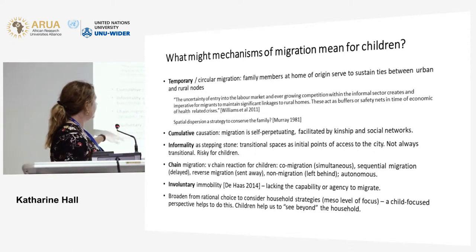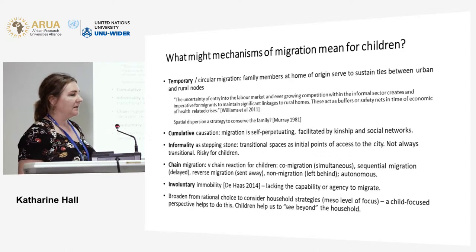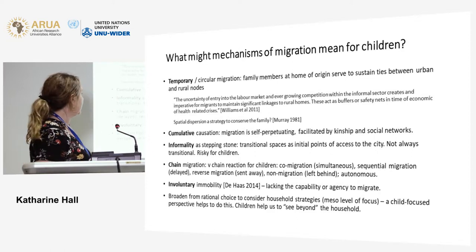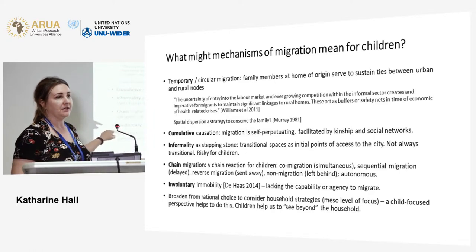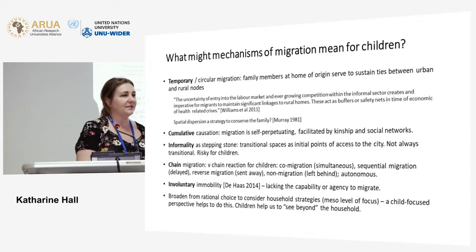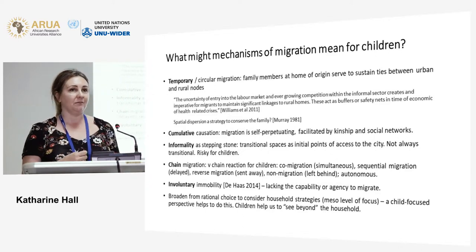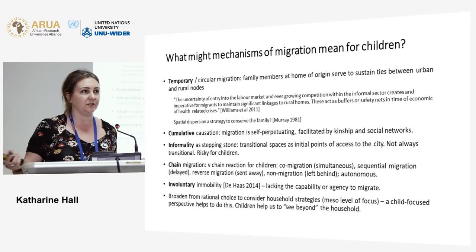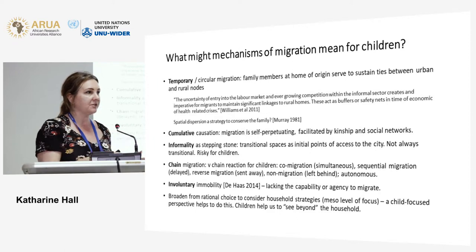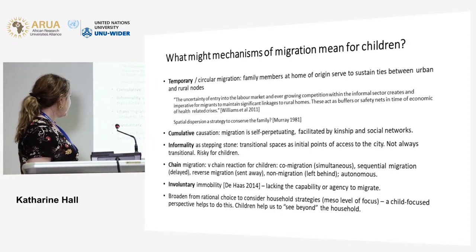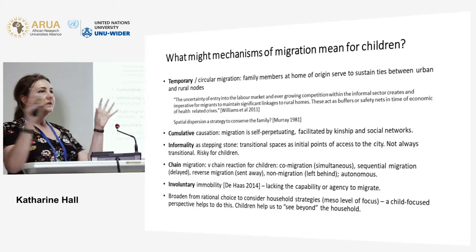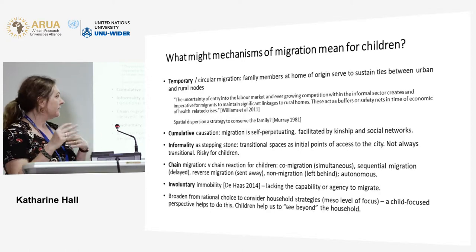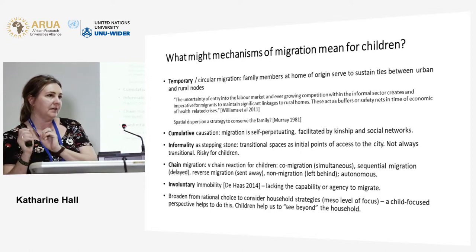There's also the interesting idea of involuntary immobility — lacking the capacity to migrate — which comes up quite a lot in South Africa, where there is an intention of sequential migration but barriers prevent it. From the perspective of children, this can mean a long period of limbo lasting an entire childhood, in which they aspire to family arrangements that are never realized. Work in anthropology has broadened from individual agency and rational choice models to consider household strategies as a meso-level focus between structural issues and the individual. A child-focused perspective helps with this because it helps us see beyond the household and understand relationships between dispersed households.